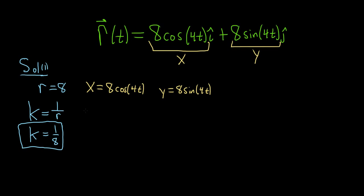Now you solve each of them for the trig functions. So that will give you cosine of 4t is equal to x over 8. Likewise, sine of 4t is equal to y over 8. Then you use the fact that cosine squared 4t plus sine squared 4t is equal to 1.